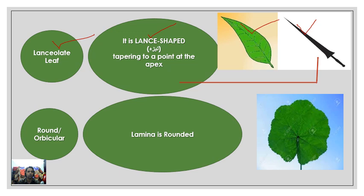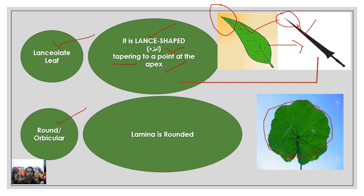The second shape is lanceolate. 'Lance' refers to a strap-like weapon used in primitive times. This leaf looks like a lance and is therefore called a lanceolate leaf. It is tapering and narrow, with a tapering end at the apex — the tip — so at both tips these leaves are very much tapering.